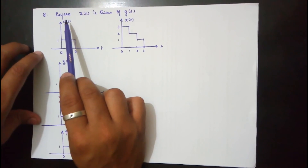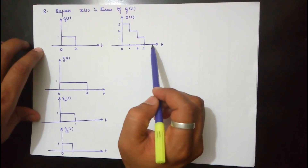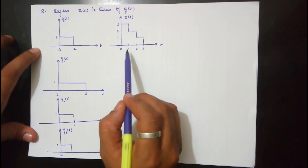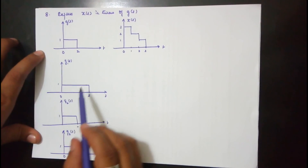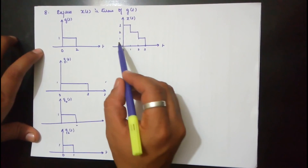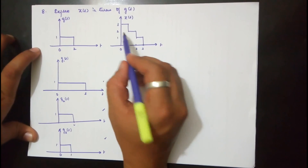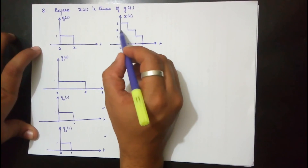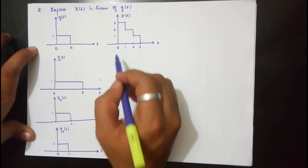The next problem is about expressing x(t) in terms of g(t). We are given the final waveform extending from 0 to 3, with amplitude 1 from 2 to 3, amplitude 2 from 1 to 2, and amplitude 3 from 0 to 1. We split this into three waveforms: g1(t) extending from 0 to 3, g2(t) extending from 0 to 2, and g3(t) extending from 0 to 1. Adding these three gives x(t).